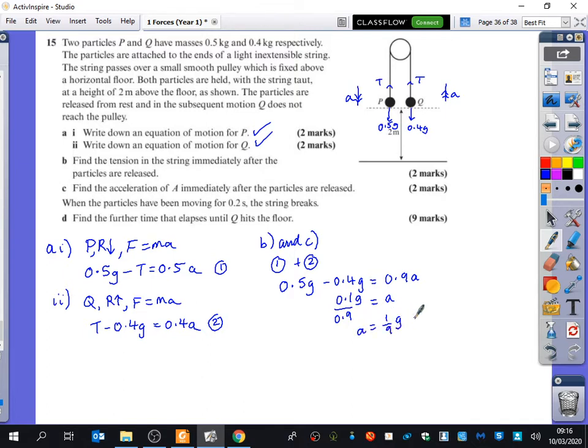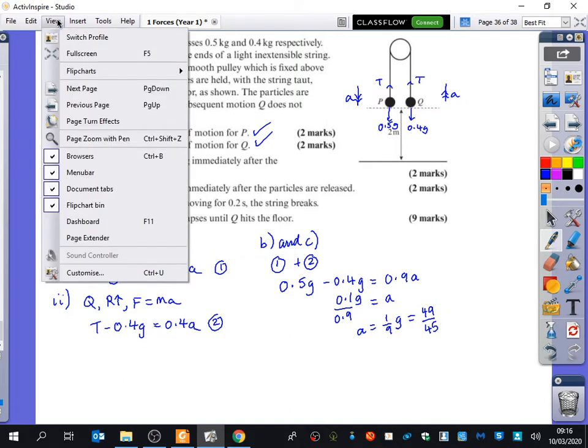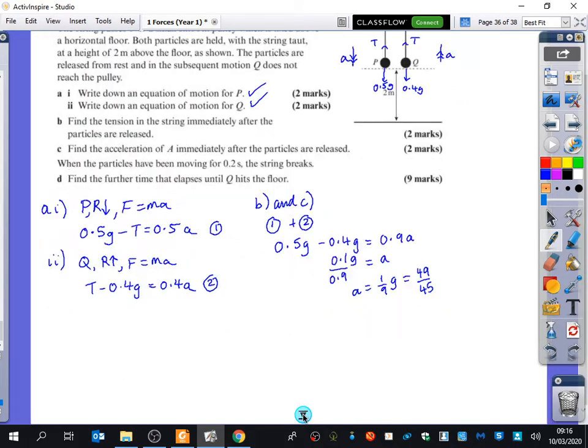And if we wanted that as a decimal, I think it's probably not going to be a particularly nice decimal. We probably won't want to have it as a decimal. We'll keep it as a fraction as 49 over 45. So we either keep it in terms of G or not. Which equation do we say is better to use to find out the tension for part C or for part B? The second one. I think the second one looks easier.